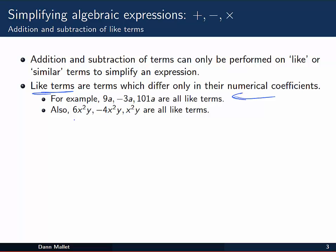Similarly, but probably not as obvious, 6x squared y, minus 4x squared y, and x squared y are also all like terms with each other because they're the same algebraic parts, x squared y, but with different numerical coefficients. So again we could add and subtract those if they were in an expression of that type.